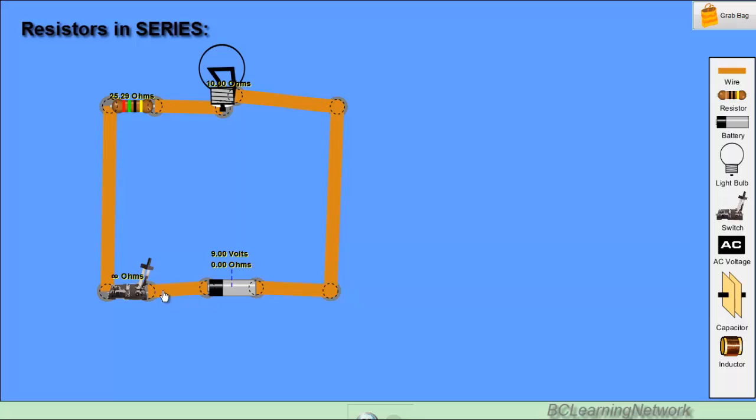Now if there's only one possible path for the current to flow, we say that the circuit is a series circuit. So if you look at this circuit carefully, the current's going to come out of the battery, flow through this switch once it's closed, up this wire, through the resistor, then through the light bulb, and then back to the battery. There's no branching off of the paths. It only has this one possible route, so we call that a series circuit. One possible path for the current to flow.